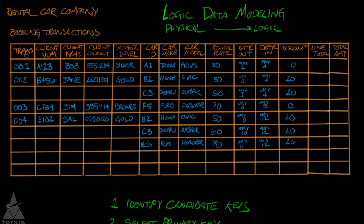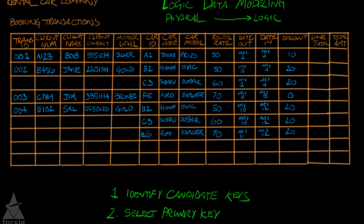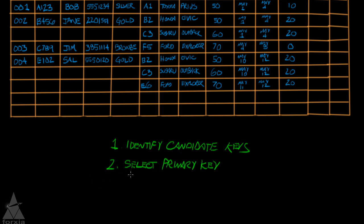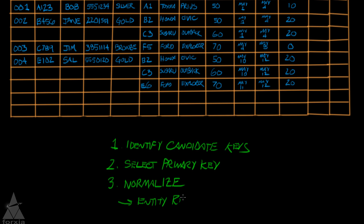The third step we need to do to put this into a logical data model is to normalize the table. When these three steps are complete, we can then look at what we call an entity-relationship diagram.